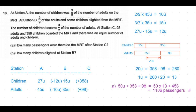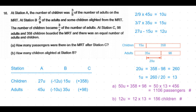For Part B — how many children alighted at Station B — we already found that 12 units of children alighted. So 12 × 13 = 156 children. This is a systematic calculation and model-drawing problem, but it's a very doable, easy-scoring five-mark question.